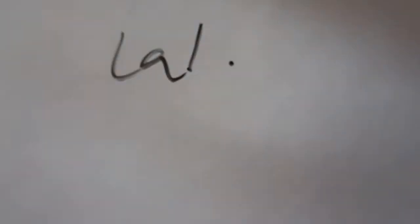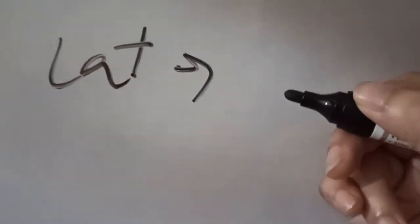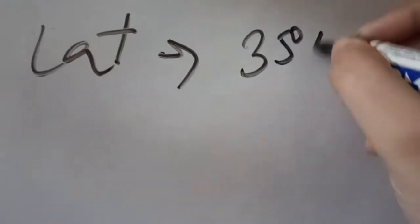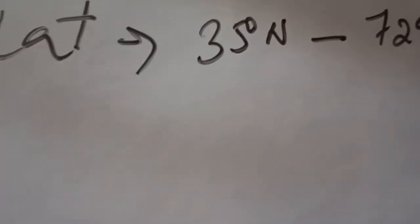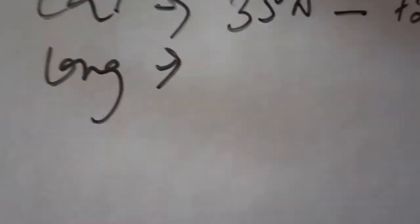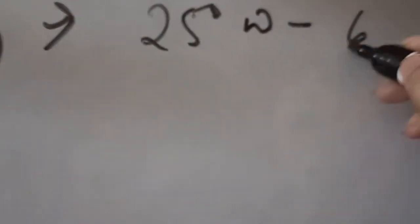Next is the location. The latitudinal and longitudinal extension of Europe: the latitudinal extent is 35 degrees north to 72 degrees north, and the longitudinal extension is 25 degrees west to 65 degrees east.